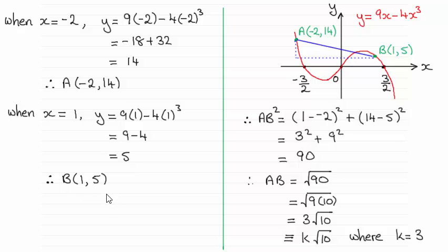So B has the coordinates (1,5). And once we've got those two coordinates, we're essentially using Pythagoras' theorem, and that is the hypotenuse AB, in other words, all squared, is equal to the sum of the squares of the other two shorter sides.